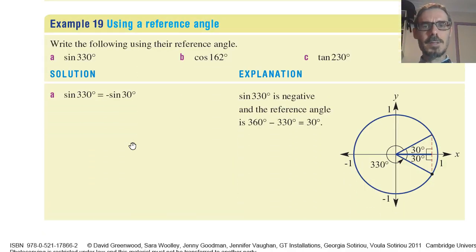You will also be asked to write trigonometry values using reference angles. So sine 330. The first thing you have to ask is, where's 330? 330 is going to be right over in the fourth quadrant. Its reference angle is going to be 30. It's the angle away from the x-axis.